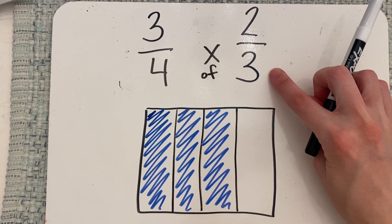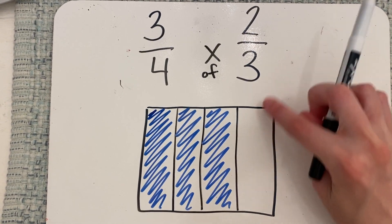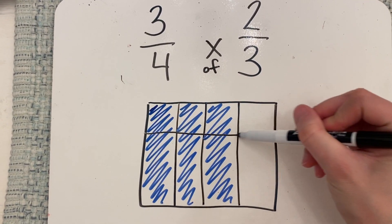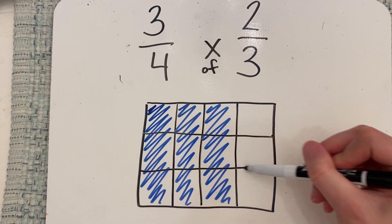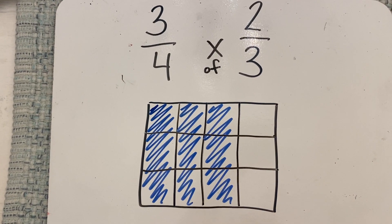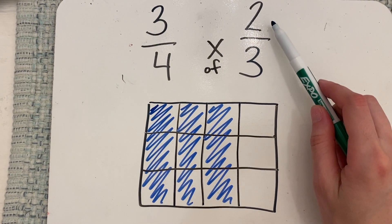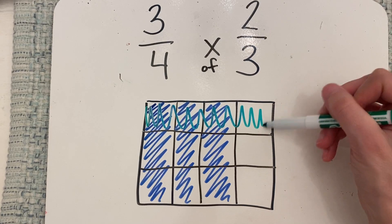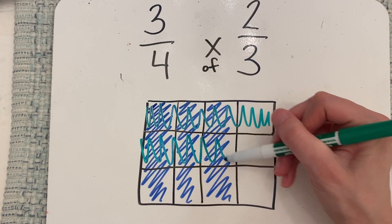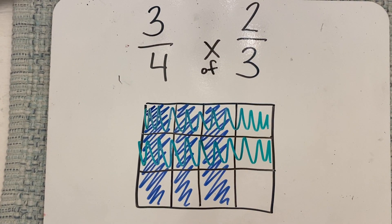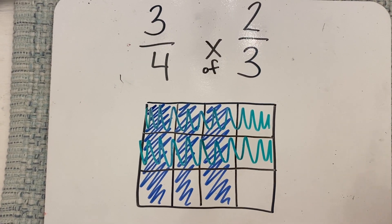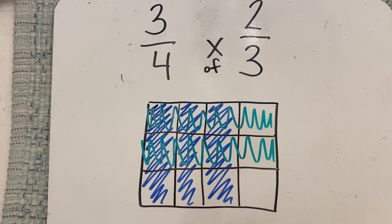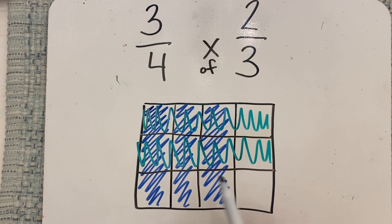My next step is to model my second fraction, but I'm going to go right on top of it. So I'm going to cut my box the other way, horizontally, into thirds. And then I'm going to shade two pieces — again, right on top, overlapping.